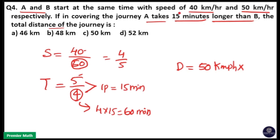Here, the real speed is 50 km per hour. So 50 km per hour into 4 parts is equal to 60 minutes. 60 minutes is equal to 1 hour, so distance is equal to 50 km.